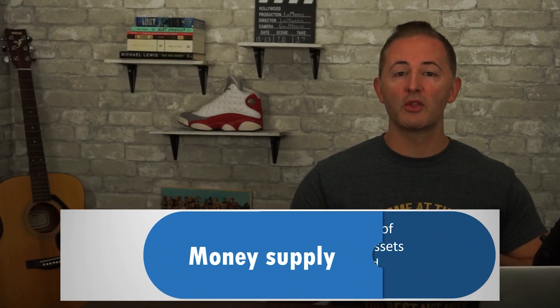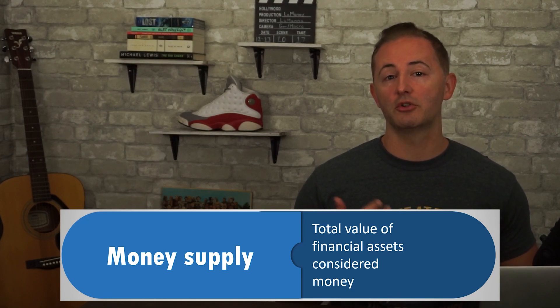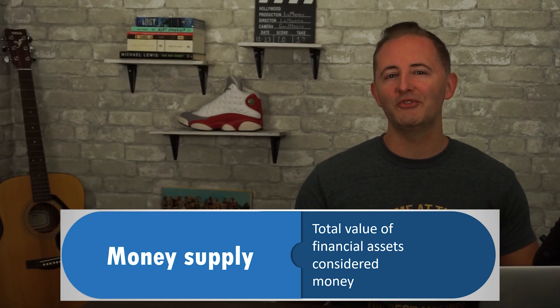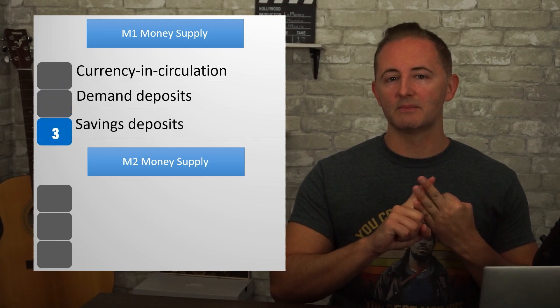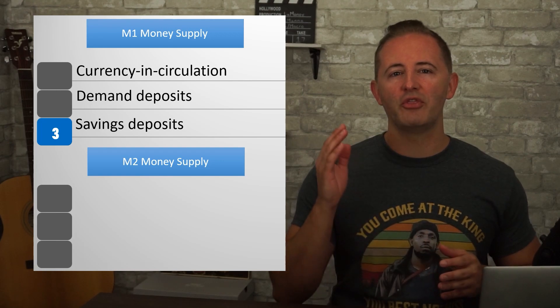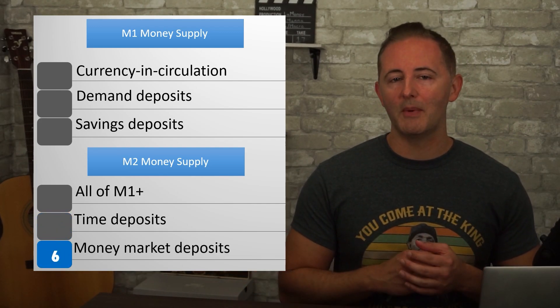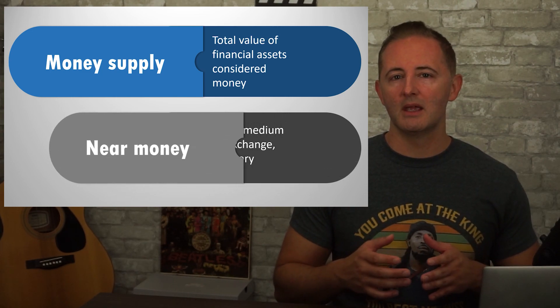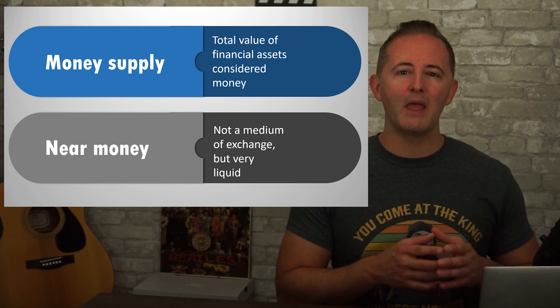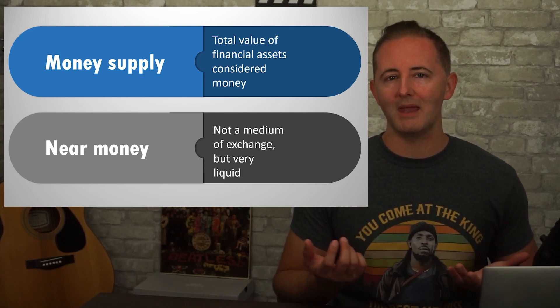Now let's finish up with more specific definitions of money. We defined money as anything that can be used as a means of payment, but there are actually several versions of what exactly constitutes money. The term money supply refers to the total value of financial assets in the economy that are considered money. The M1 definition of money supply includes three things: currency in circulation or cash, demand deposits, and savings deposits. M1 is a narrow definition that only includes the most liquid financial assets. The M2 definition is broader — it includes all of M1 as well as time deposits and money market funds. These are considered near monies, meaning they aren't money because you can't spend them, but they are relatively liquid and can quickly be converted into currency or demand deposits.